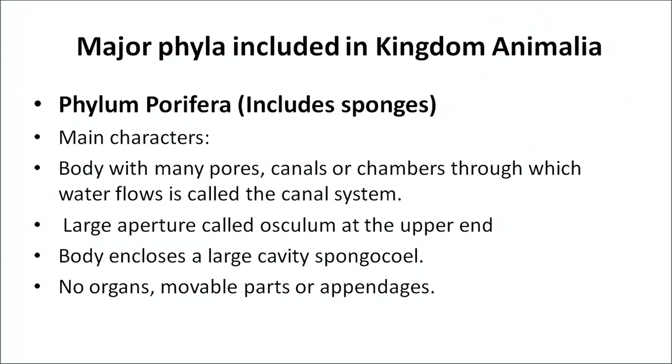The first phylum we will study under this sub-kingdom is phylum Porifera. It has a cellular grade of organization and only two embryonic germ layers, meaning it is diploblastic. It is acoelomate — no body cavity, no coelom. Notochord may or may not be present. It is asymmetrical.